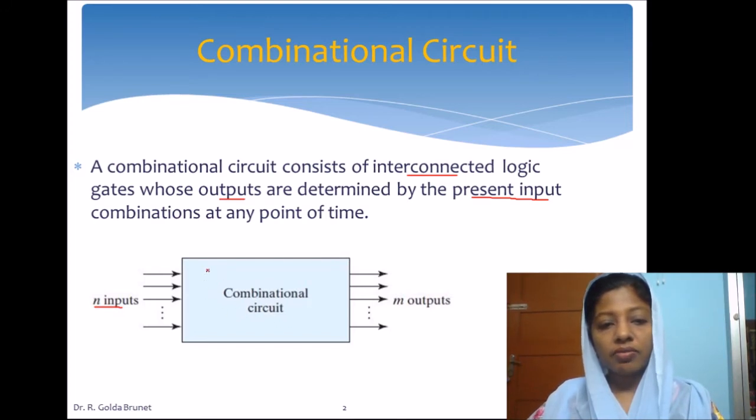Here we have many logic gates interconnected to produce these outputs. There can be more than one output. In this example, we have m outputs and any change in the input will affect the output. This is the combinational circuit.